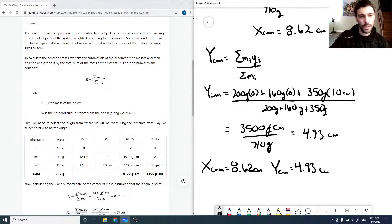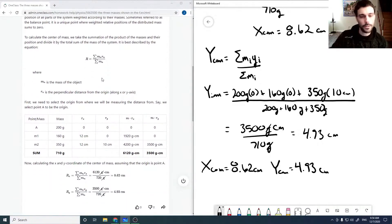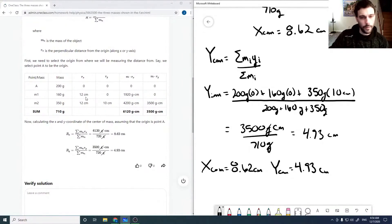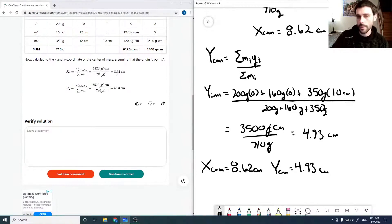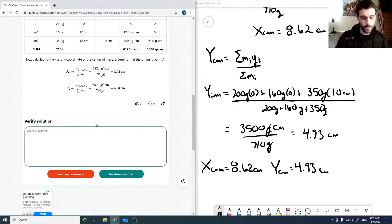Okay, and so we just find our center of masses by summing up the masses times the distances. Here we have a little table, but in the end we get 8.62 for our x and 4.93 for our y. So that looks good.